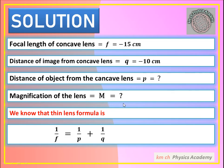The second thing we have to find is the magnification of the lens — written as M. We will use the lens formula: 1/f = 1/p + 1/q, where F is the focal length, P is the distance of the object from the lens, and Q is the distance of the image from the lens. Since F and Q are given, we need to find P. So we rearrange: 1/p = 1/f − 1/q.